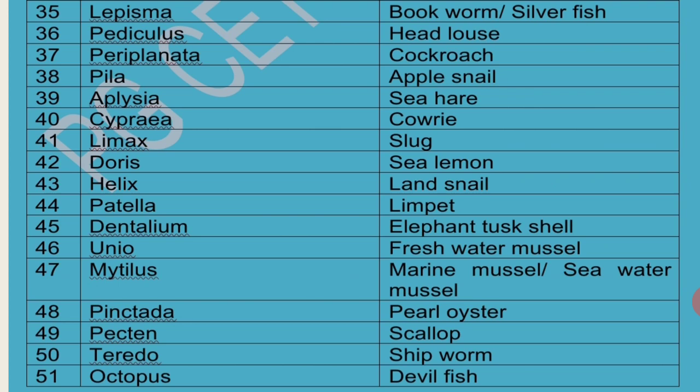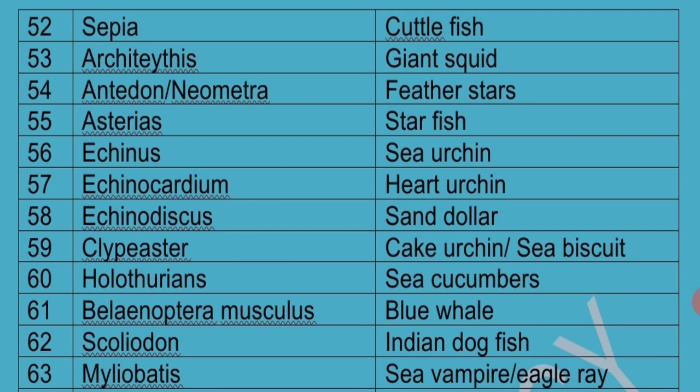Pecten is also called Scallop. Teredo is called Ship Worm. Octopus is called Devil Fish. Sepia is called Cuttle Fish. Architeuthis, which is the biggest invertebrate, is called Giant Squid because of its great size.